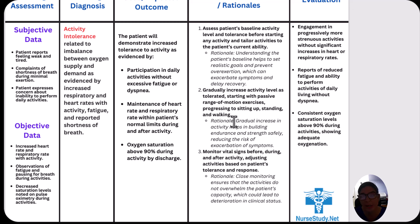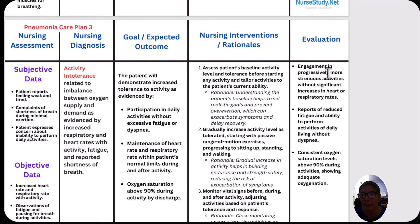Third, monitor vital signs before, during, and after activity, adjusting activities based on the patient's tolerance and response. Close monitoring ensures that activities do not overwhelm the patient's capacity, which could lead to deterioration of clinical status. Our evaluation for this final nursing care plan will be: engagement in progressively more strenuous activities without significant increases in heart or respiratory rates, reports of reduced fatigue and ability to perform activities of daily living without dyspnea, and consistent oxygen saturations above 90% during activities showing adequate oxygenation.